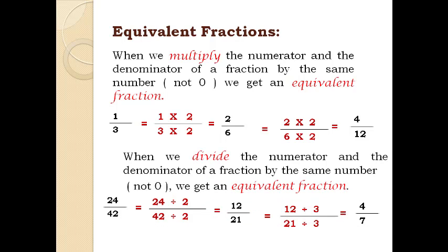The second way to get an equivalent fraction is when we divide the numerator and denominator of a fraction by the same number (not 0). For example, 24 over 42 divided by 2 gives 12 over 21, and then dividing by 3 gives the equivalent fraction 4 over 7.